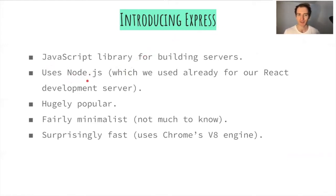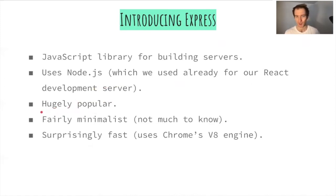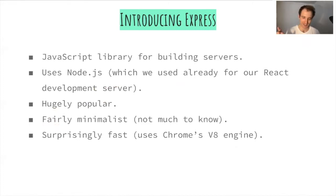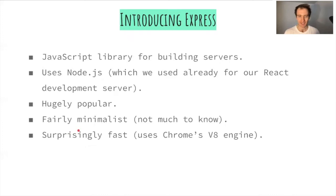Express is a JavaScript library — just like React, React Router, and everything else we've been using. It's a set of functions hosted for free online that we can tap into whenever we want. Express runs on Node.js, which allows JavaScript to interact with our file system. It's a really popular framework, and loads of companies are using the MERN stack now. You may also have heard of the MEAN stack, which is identical but uses Angular instead of React.